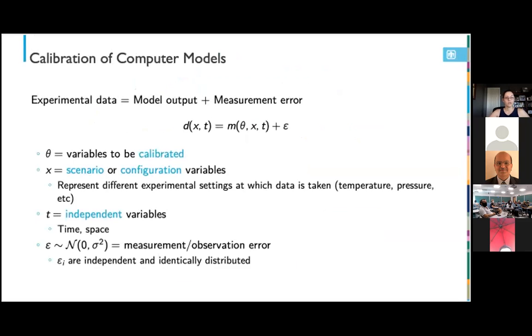So let's assume that we have this expression for how the model output relates to the experimental data. In this expression, D is the data. M is our model, whether it be a computer model or a function. Theta are the model parameters to be calibrated. X are state or configuration parameters, which are not calibrated. They represent different experimental settings at which the data is taken, such as temperature or pressure. T are the independent variables, such as time or space, and epsilon is the measurement error, which we assume to be normally distributed and IID. For model calibration, the goal is to find the set of parameters that minimize the difference between the data and the model output. So we can rewrite this problem as an optimization problem. And this can then be solved with your favorite optimization or calibration routine.